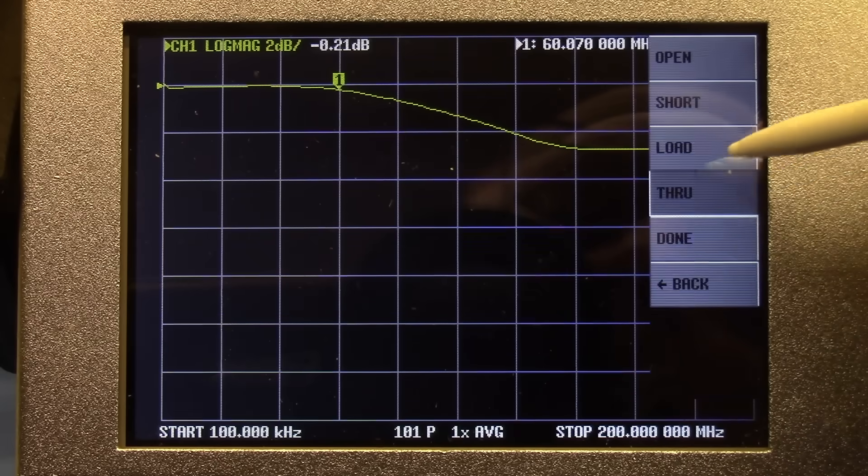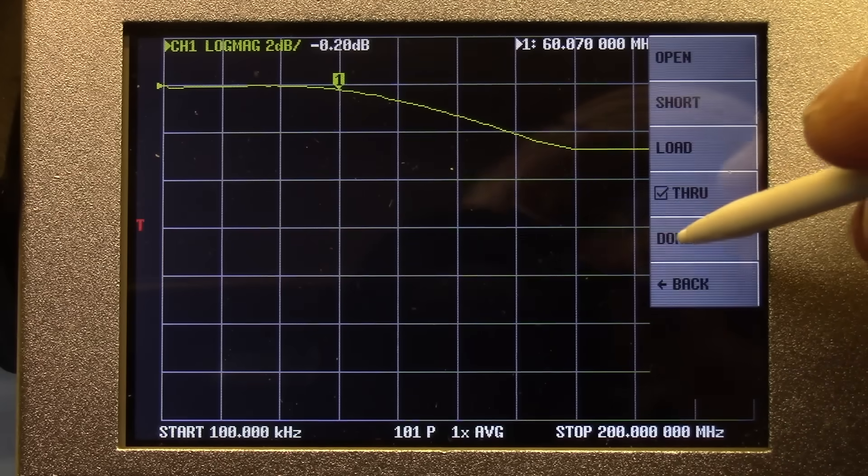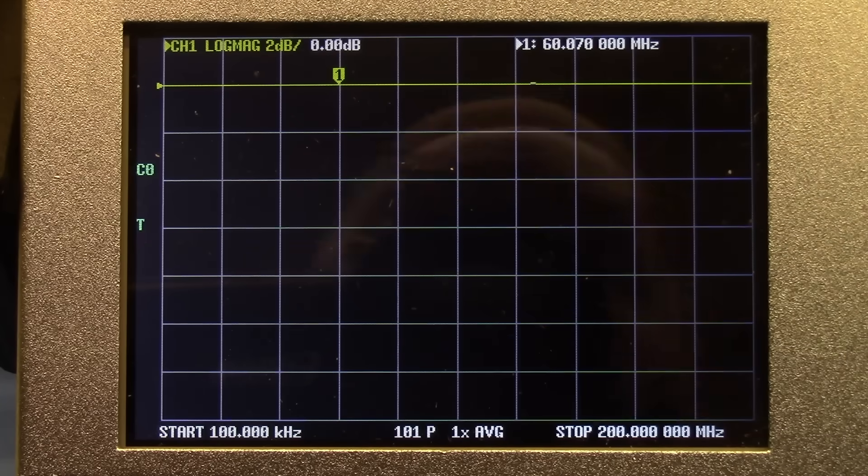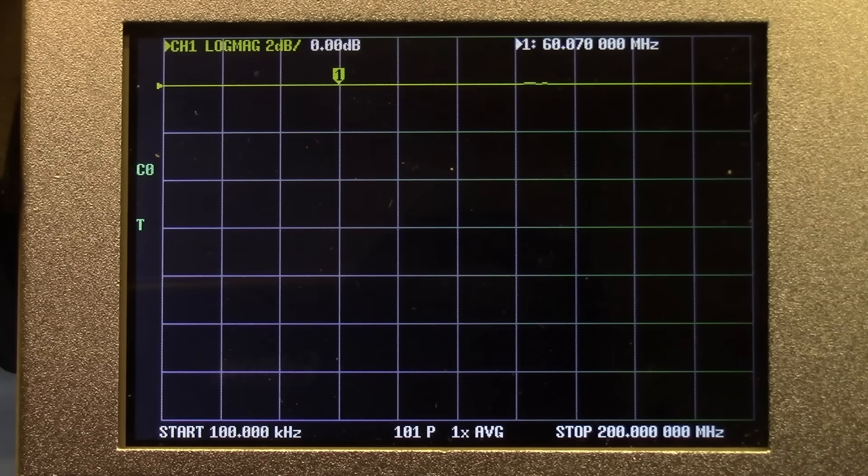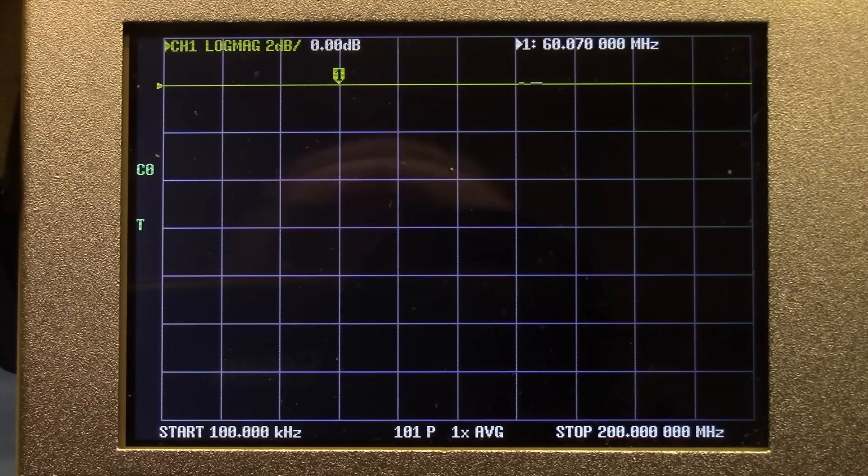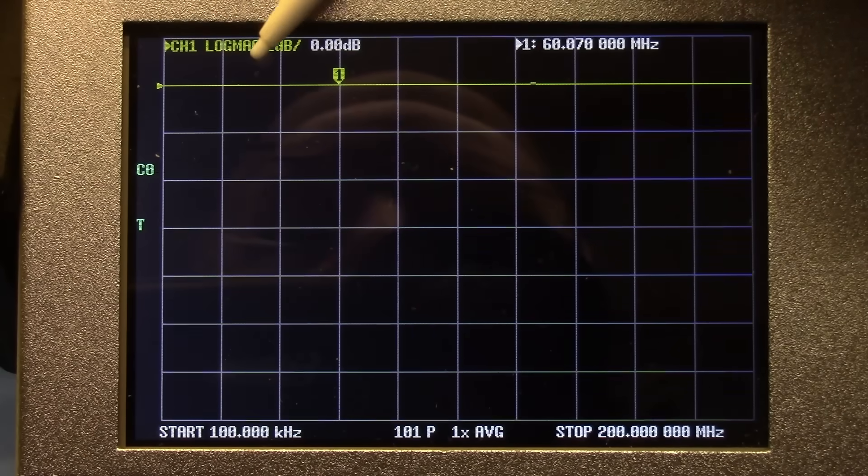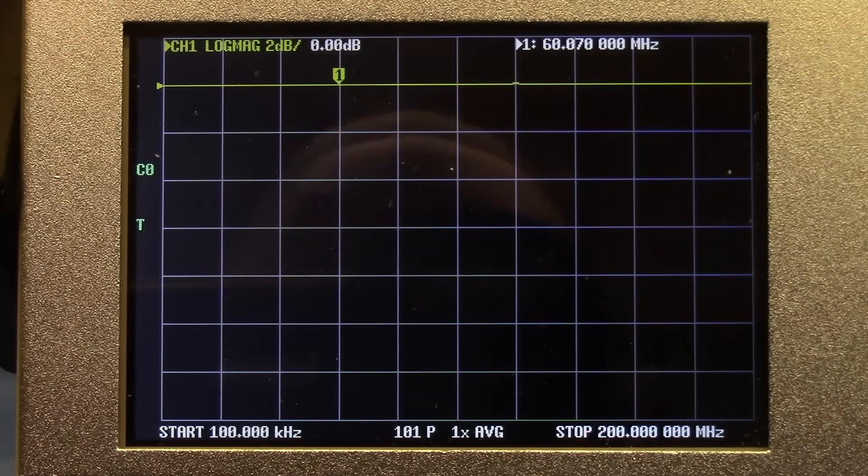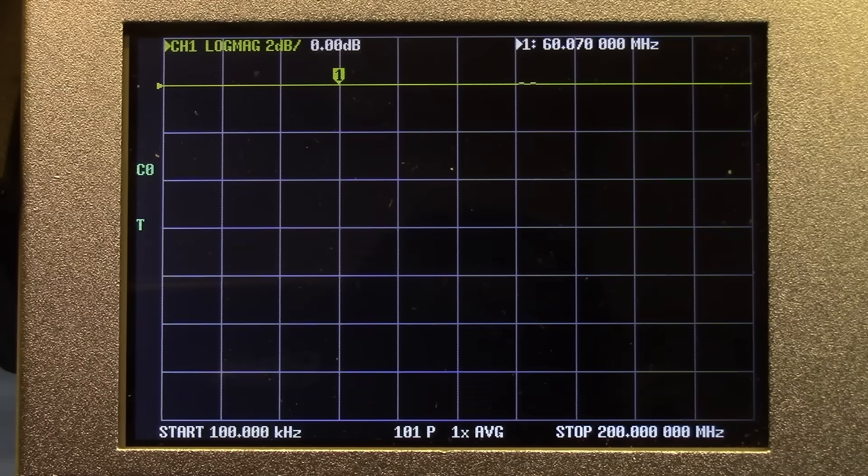I don't need the rest of the calibration stuff like open, short, and load for this measurement. If your particular device also requires an isolation step in the through calibration, simply remove the wire connecting the two test clips and perform this step. Now that the calibration is complete, notice now that the trace is sitting at the top, with the marker showing 0 dB with the wire loop in place. We are ready to go!